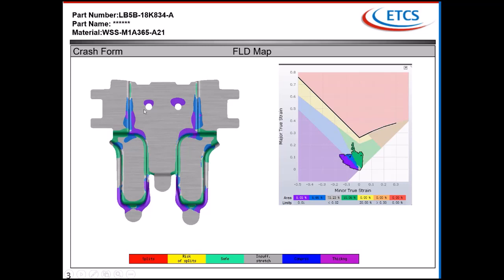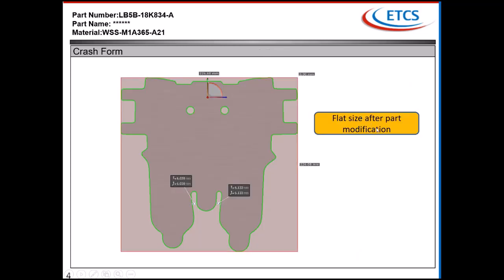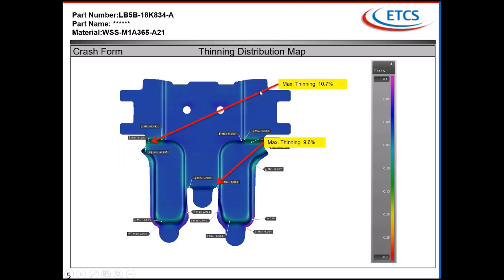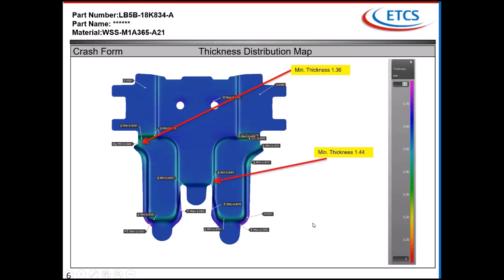The purple color you see on those two holes are pilot holes, so naturally we will have some thickening there when it pulls - material gets compressed over there. Wherever we have radii, there is also small thickening. This is the developed trim line of the part. This is a progressive tool, so we needed some pilot holes. This is the thinning distribution map, showing maximum thinning of 10.7%.